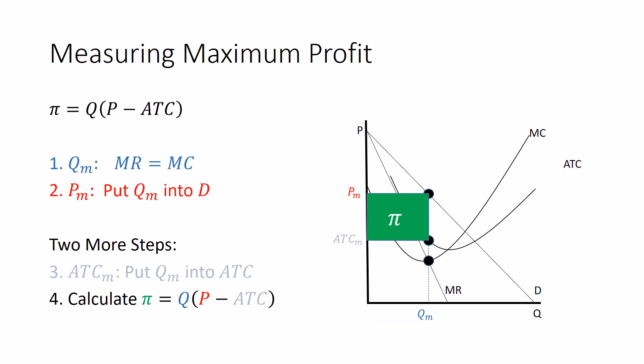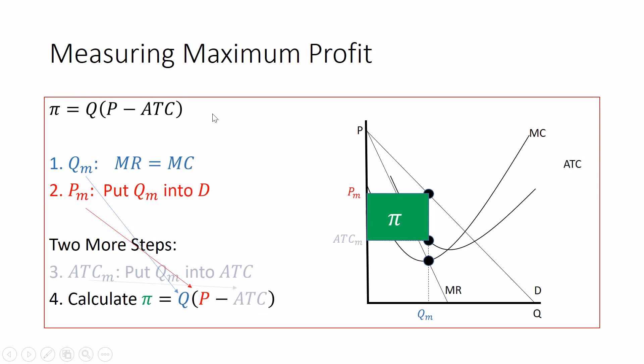So to reiterate, all we did, we substituted in the quantity. We substituted in the price. We substituted in the average total cost. If you ever get lost and aren't sure where to start, come back to this formula for profit. Quantity times price minus average total cost.